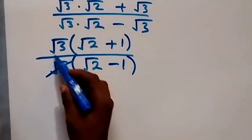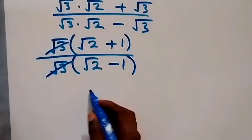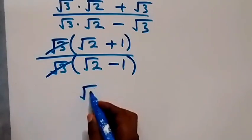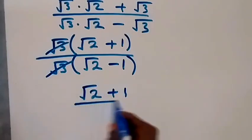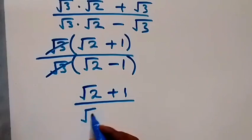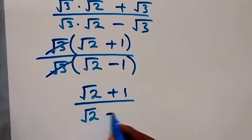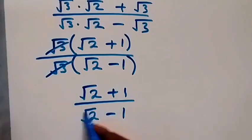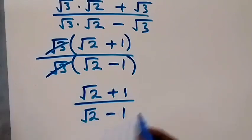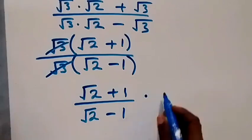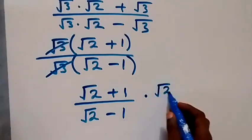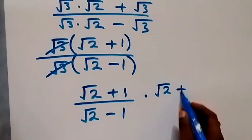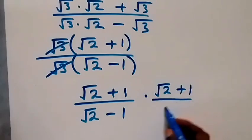So from here, root three cancels out. We are left with root two plus one over root two minus one. Then we can rationalize this and multiply by the conjugate, which is root two plus one over root two plus one.